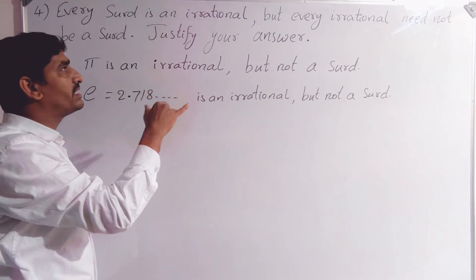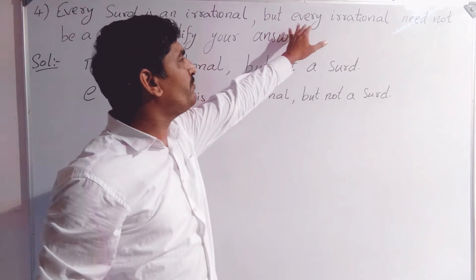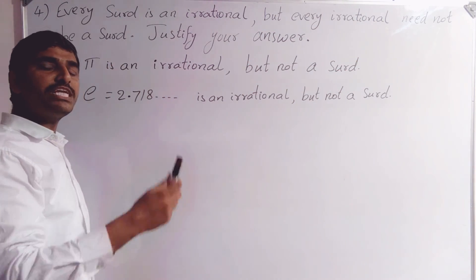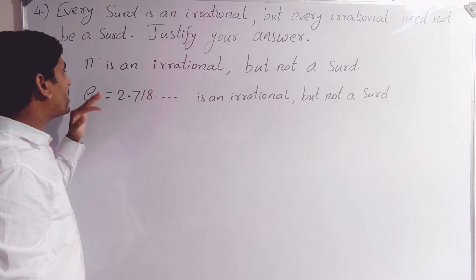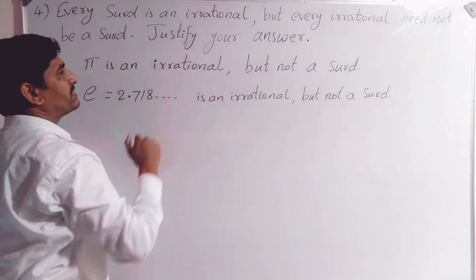Every surd is an irrational. Root terms - all the roots are irrational. But converse need not be true, so every irrational need not be a surd. We know the definition of this surd. We can justify your answer with examples.